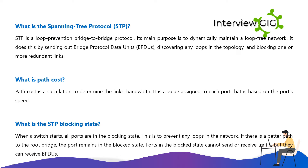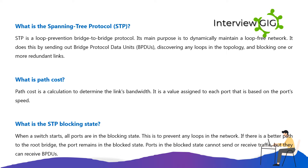What is path cost? Path cost is a calculation used to determine a link's bandwidth. It is a value assigned to each port based on the port speed. What is the STP blocking state? When the switch starts, all ports are in the blocking state, to prevent any loops in the network.